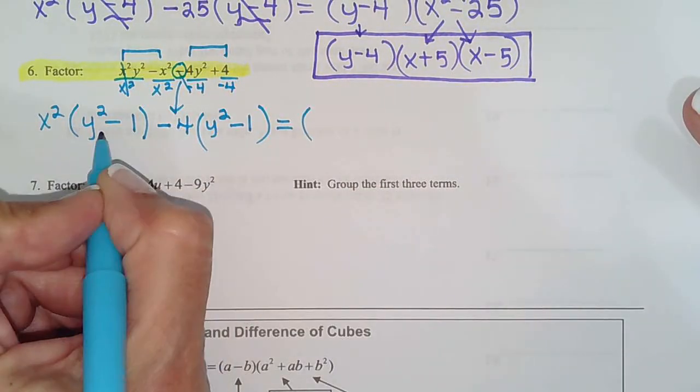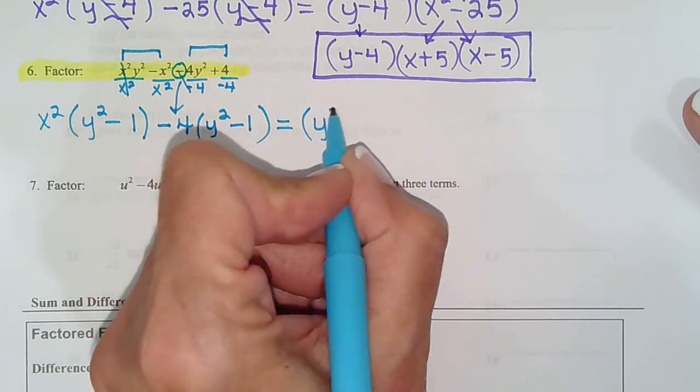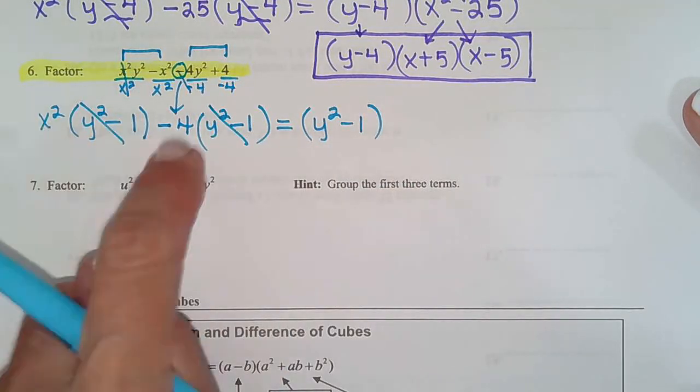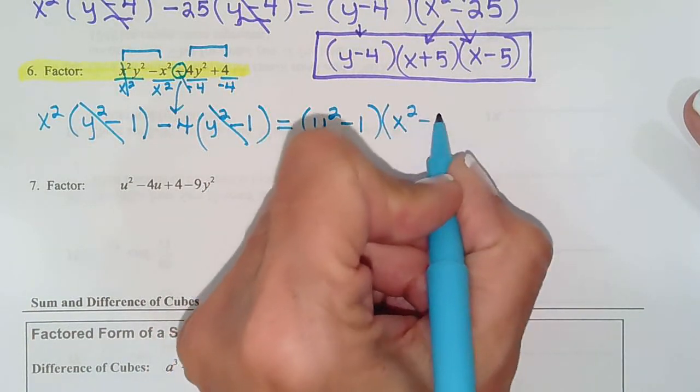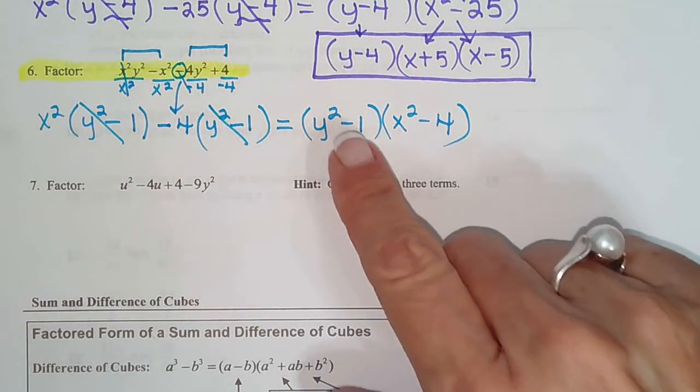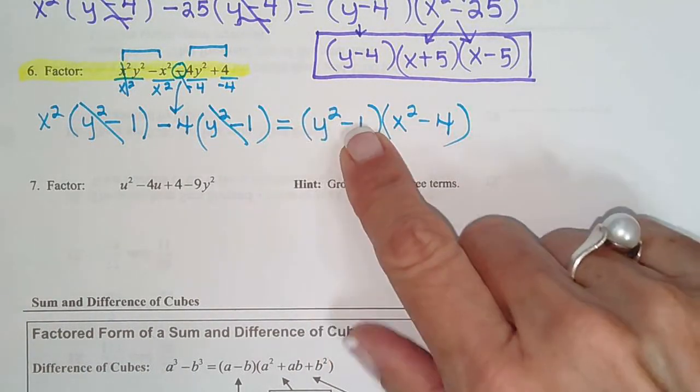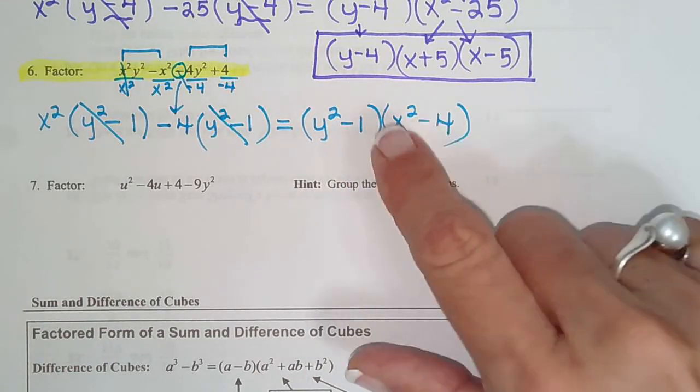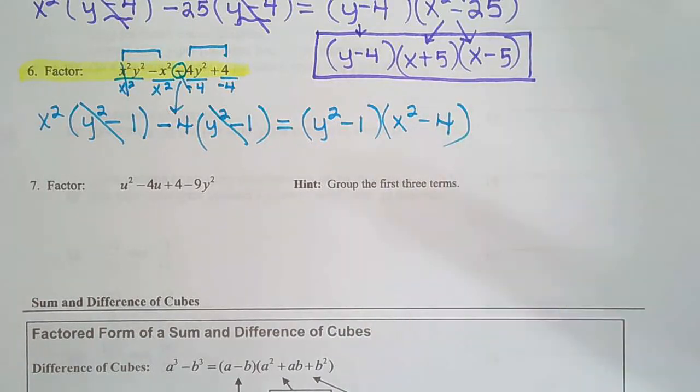So we pull out our next GCF, which is y squared minus 1. And what's left? x squared minus 4. Oh, my goodness. What do we have here? Difference of squares. Remember how I told you 1 is everything? Difference of squares. They both factor. So this answer is going to have four parentheses.